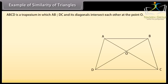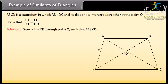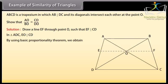ABCD is a trapezium in which AB is parallel to DC and its diagonals intersect each other at point O. Show that AO upon BO equals CO upon DO. Draw a line EF through point O such that EF is parallel to CD. In triangle ADC, EO is parallel to CD. By using the basic proportionality theorem, we obtain AE upon ED equals AO upon OC — mark it as equation 1.